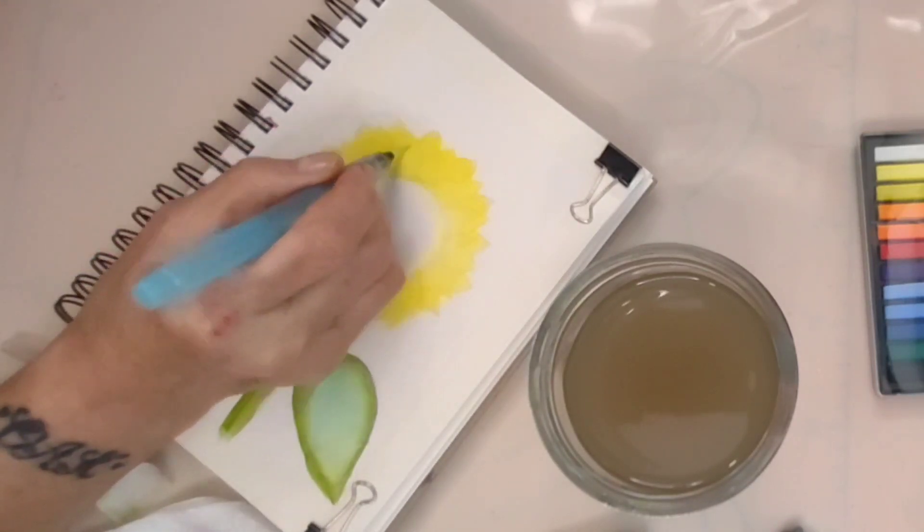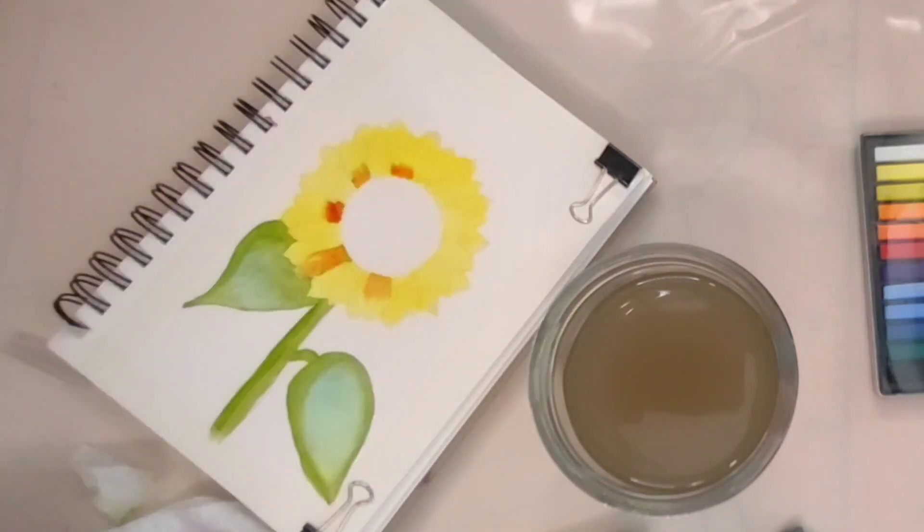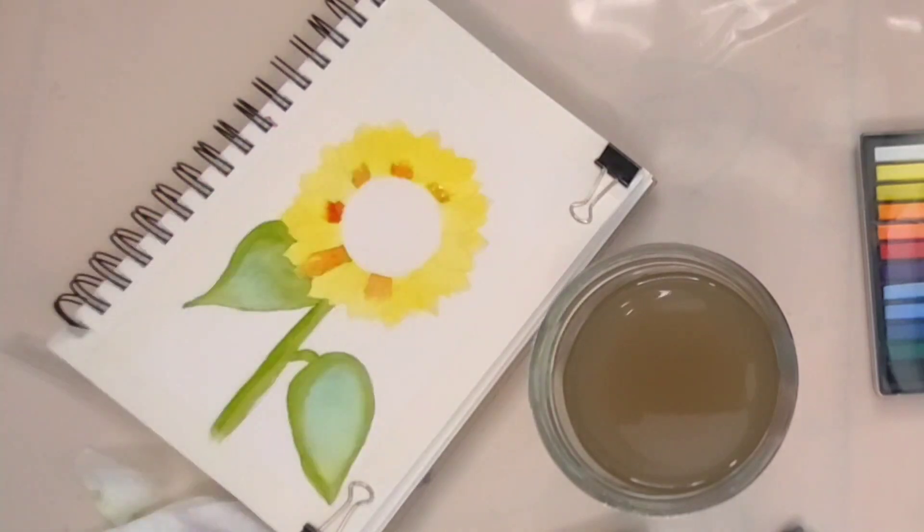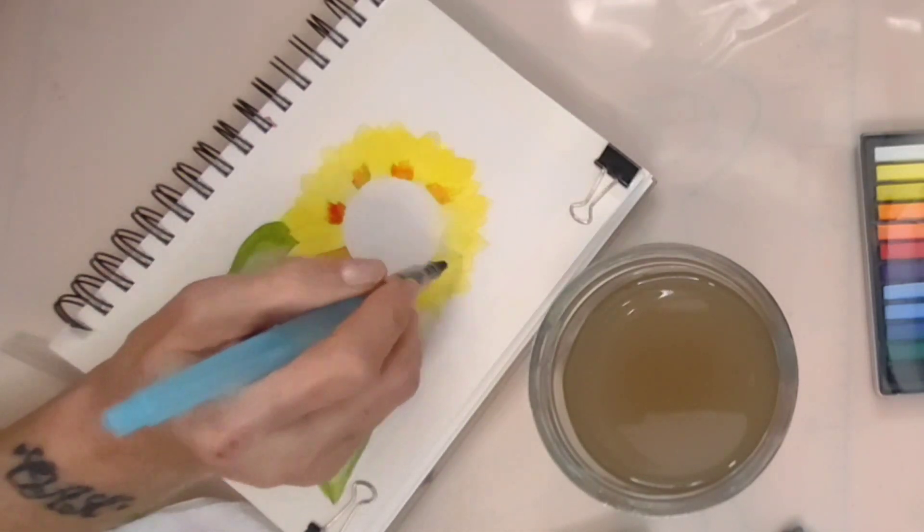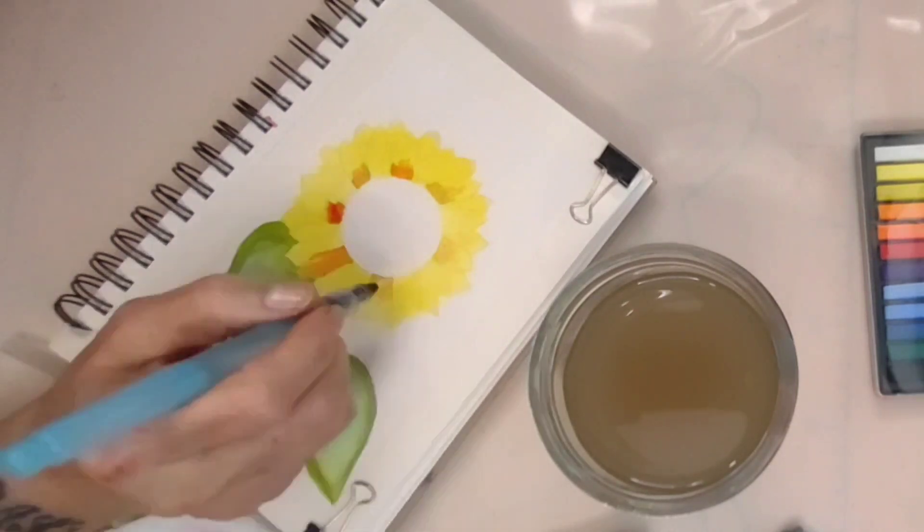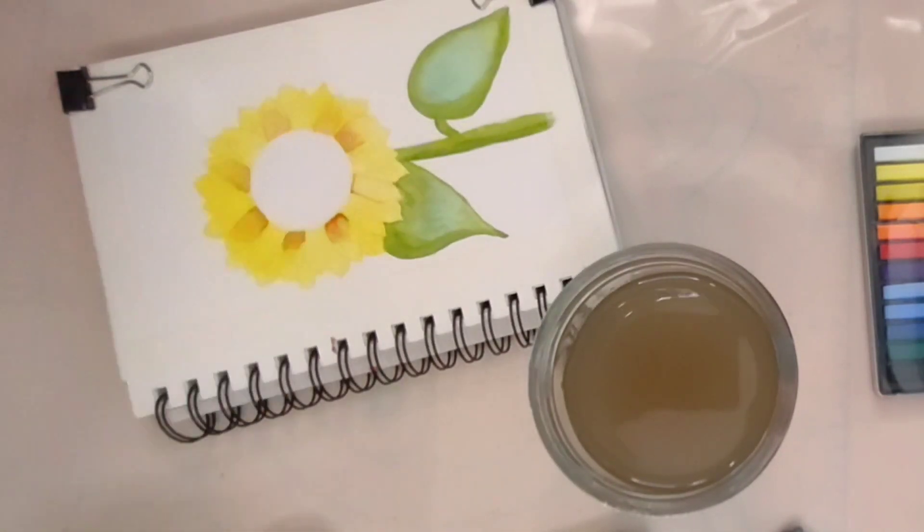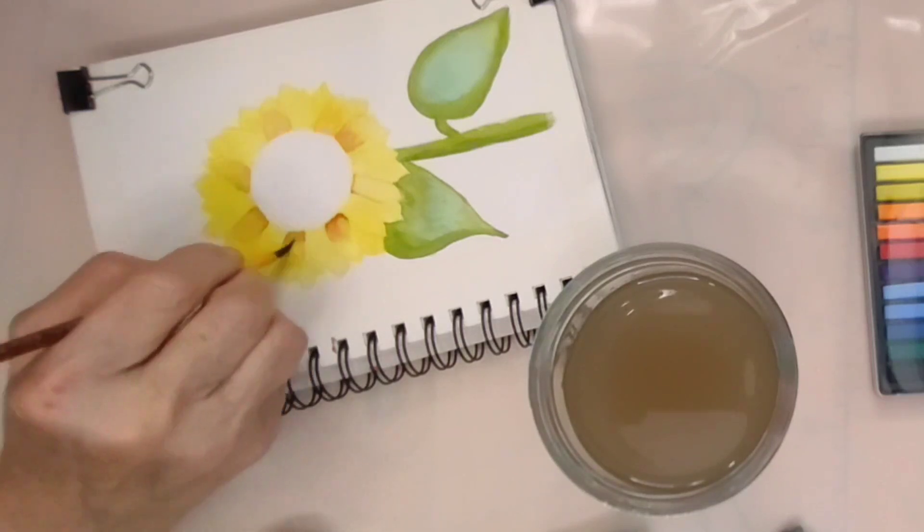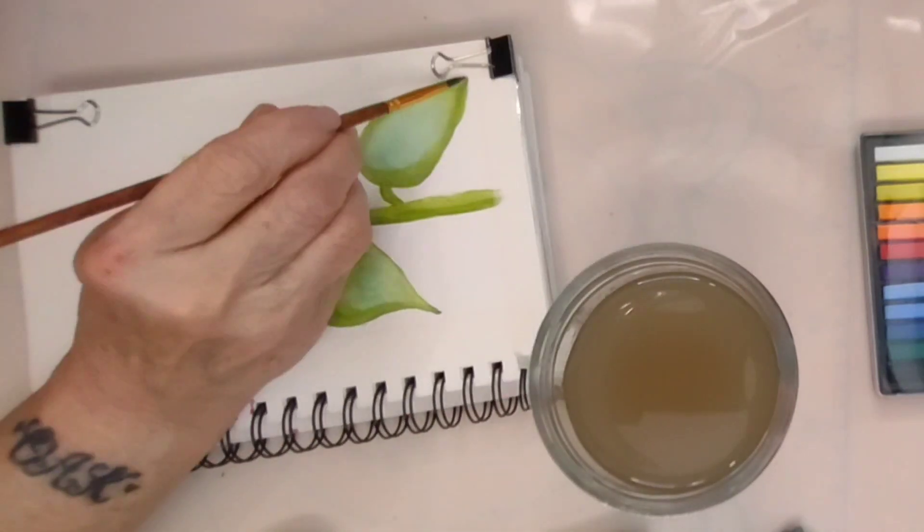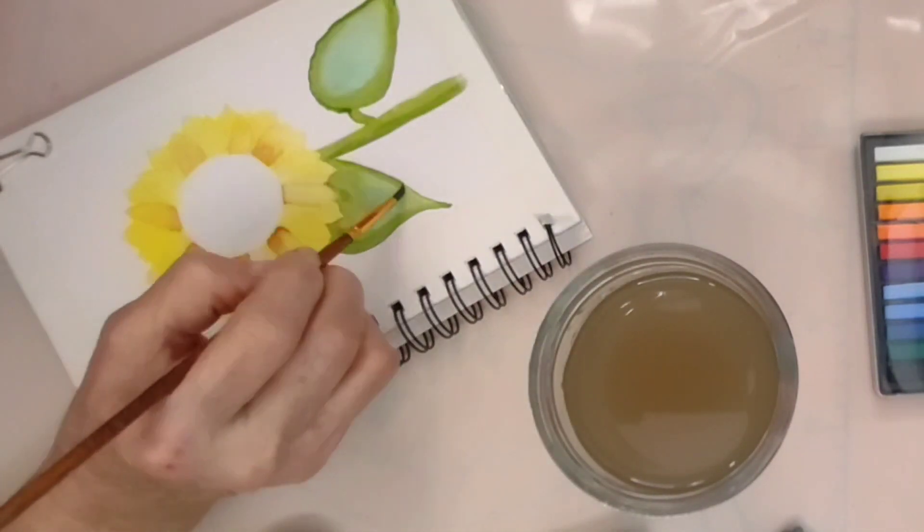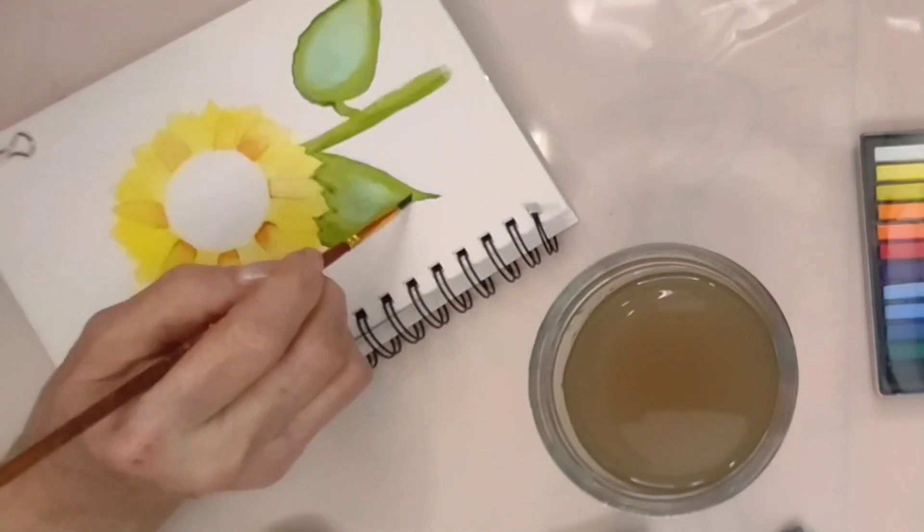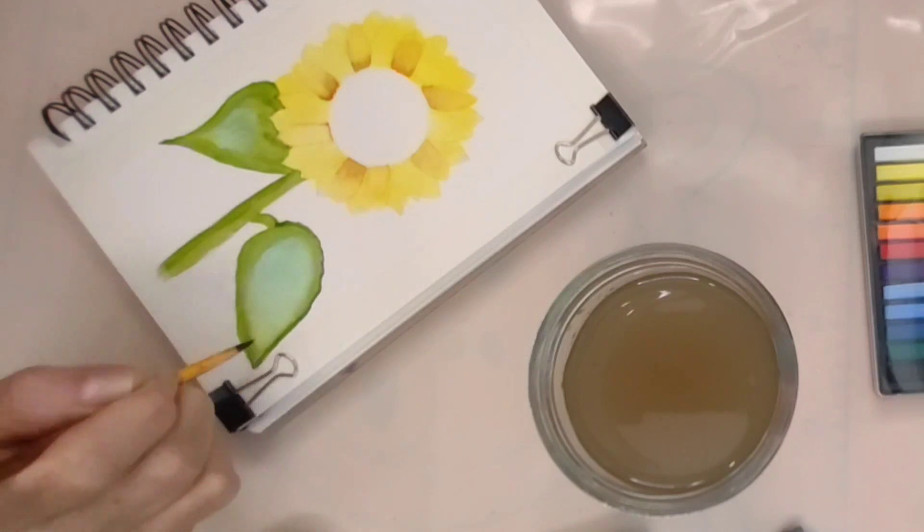Scientific research has also shown that sunflowers have a positive impact on our well-being. Studies have found that exposure to sunflowers can increase feelings of happiness and reduce stress levels. The vibrant colors and unique shape of the flower stimulate the senses and trigger the release of endorphins, the body's natural mood-boosting hormones. Simply having sunflowers around can create a more positive and cheerful atmosphere.